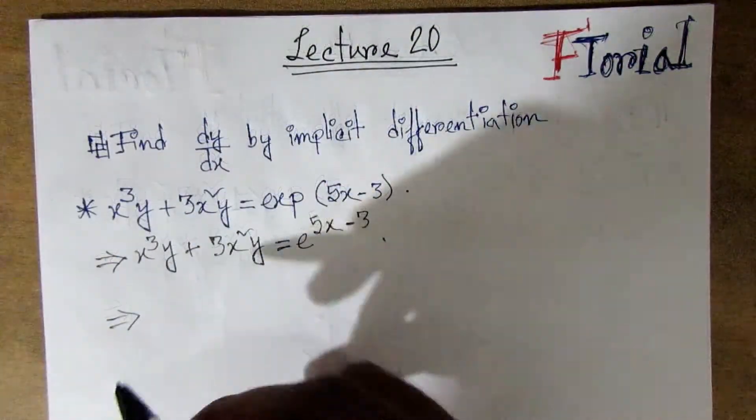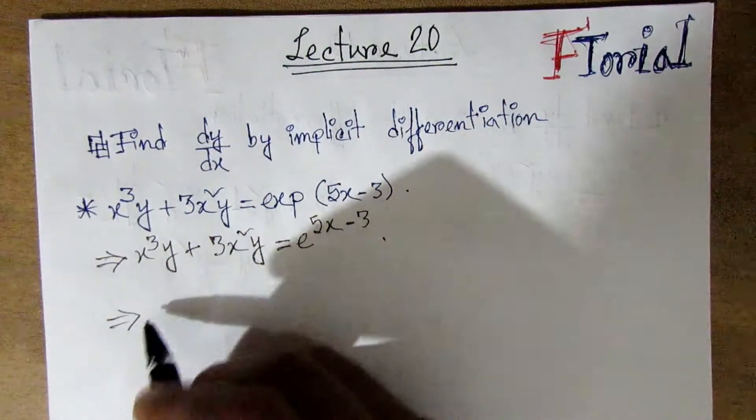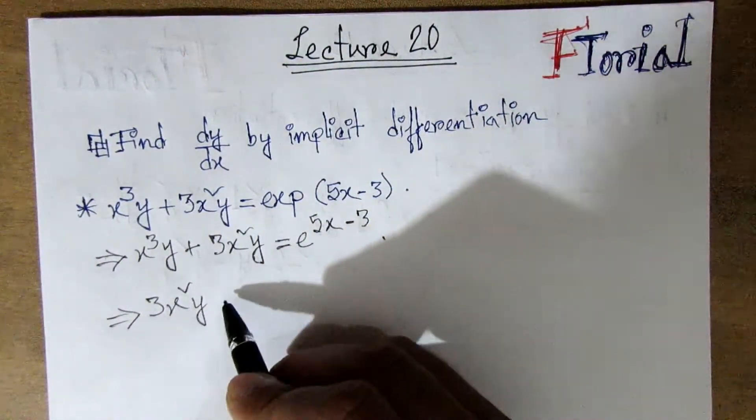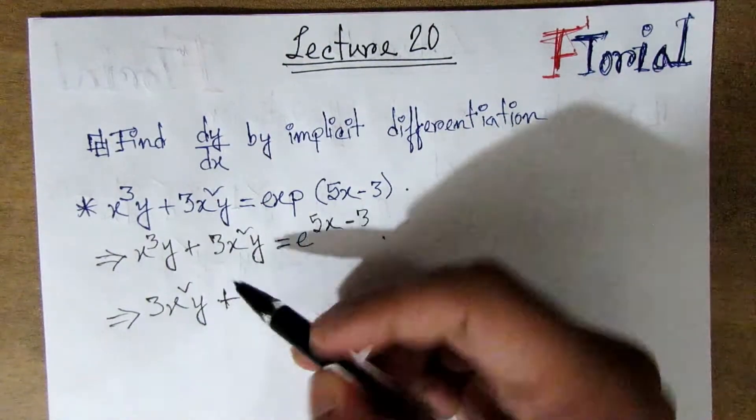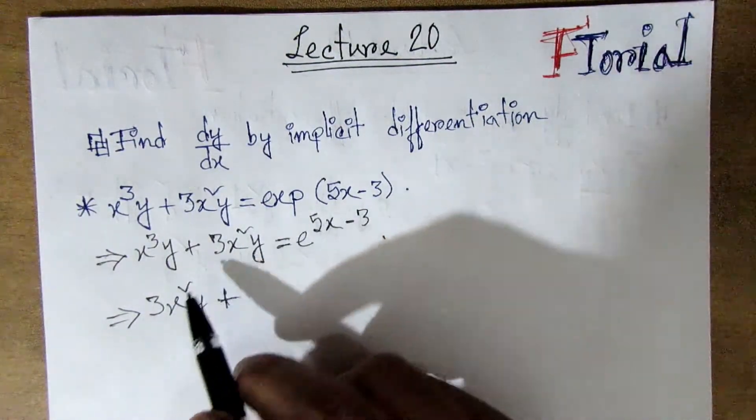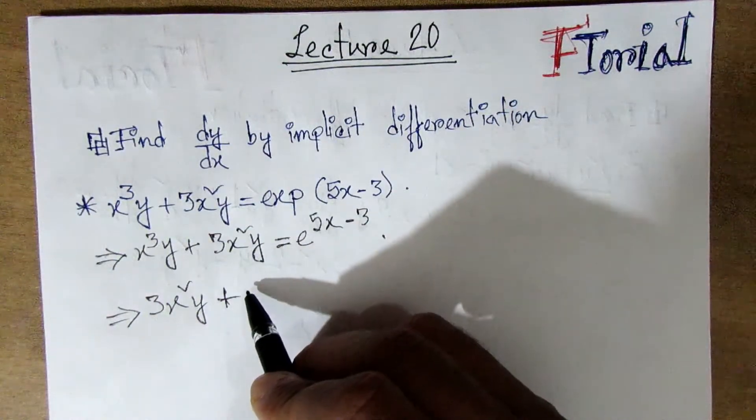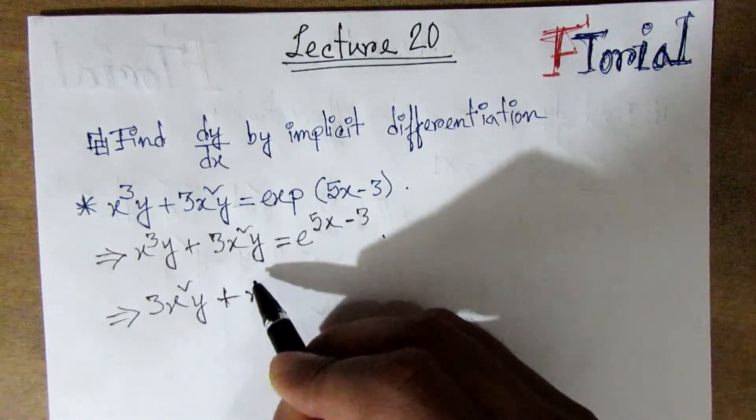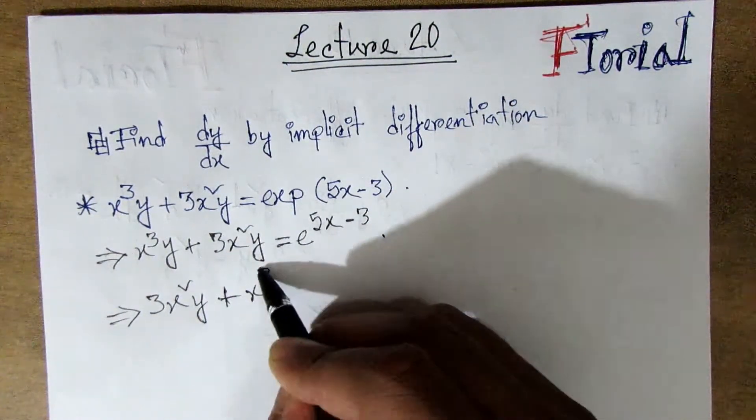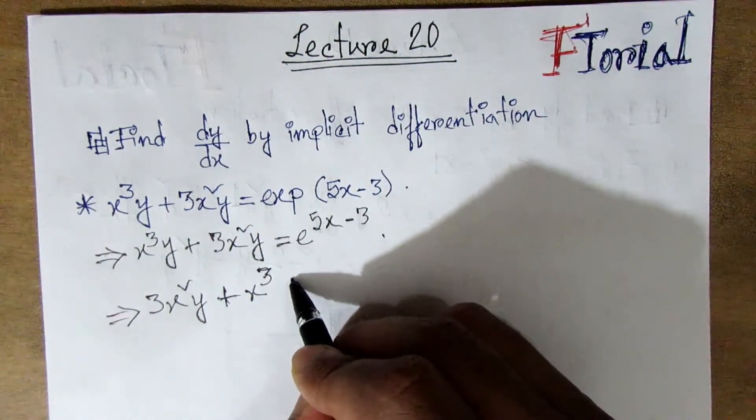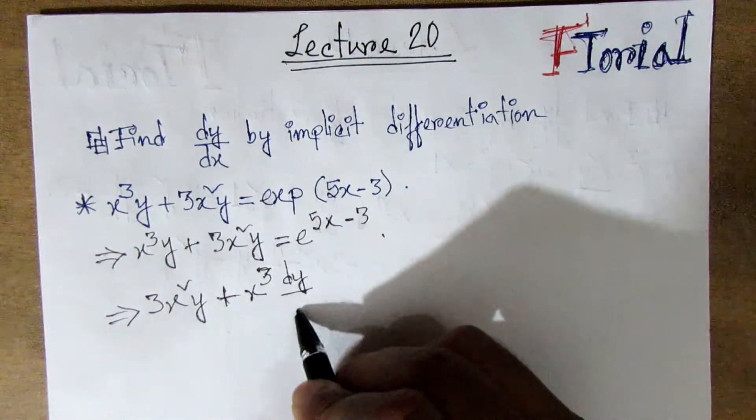I'm going to differentiate both sides. Taking the derivative, we can rewrite this as x³ and y³, then differentiate with respect to x to get dy/dx.